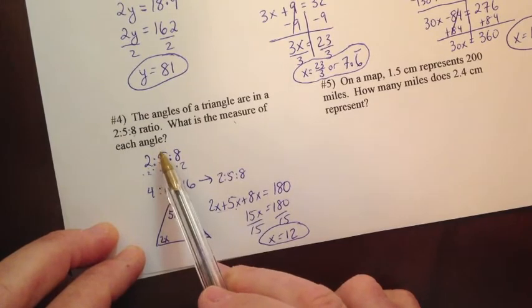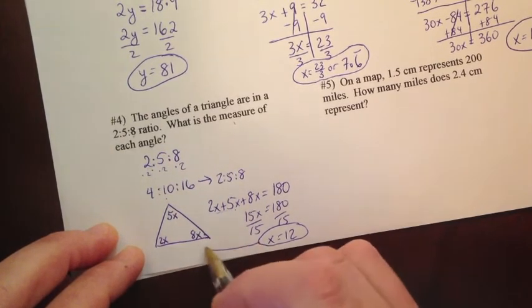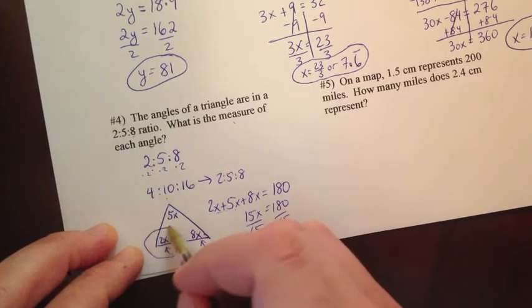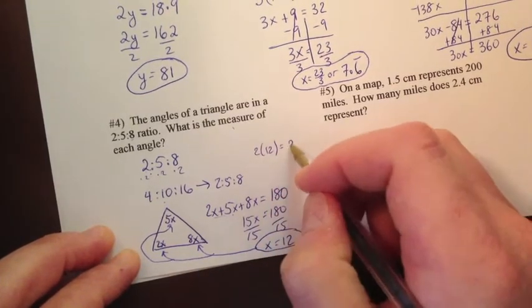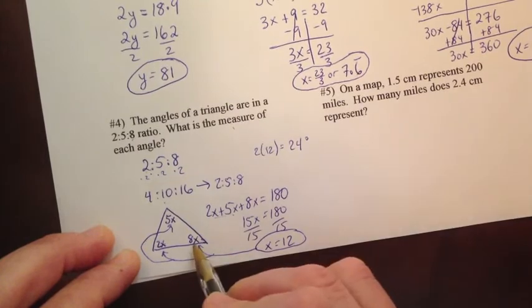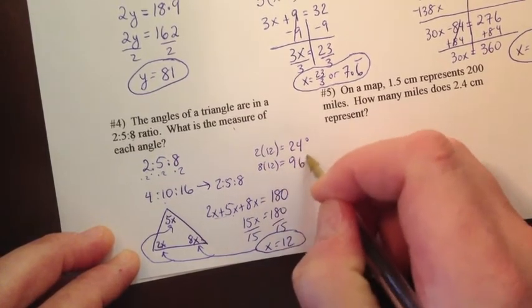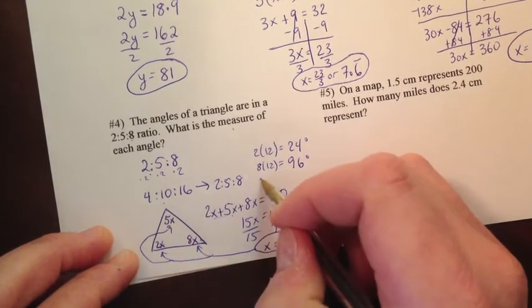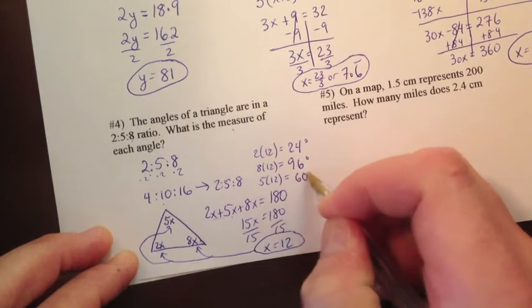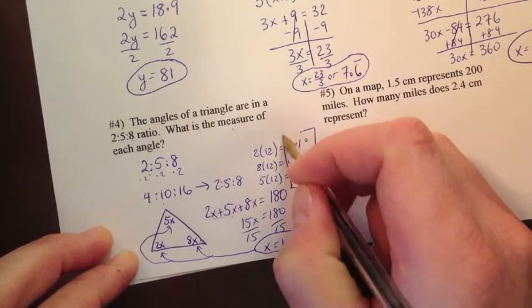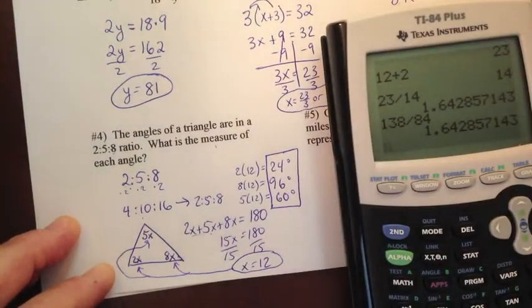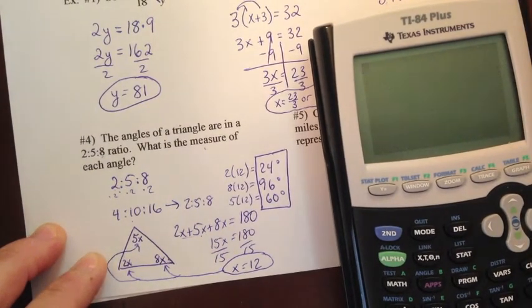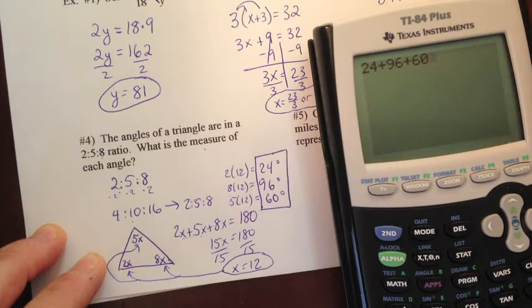Now, the question is, what's the measure of each angle? So let's go back to the picture here, and let's plug in a 12 for all these x's. We would have 2 times x. So 2 times 12 is 24 degrees. We'd have 8 times x. 8 times 12 is 96 degrees. And then we would have 5 times x. So 5 times 12 is 60 degrees. So the 3 angles are 24, 96, and 60. And if I take that, let's go ahead and add those up here. 24 plus 96 plus 60. Does that equal 180? And the answer is yes. So the answer is good.